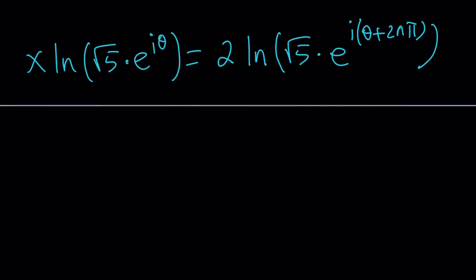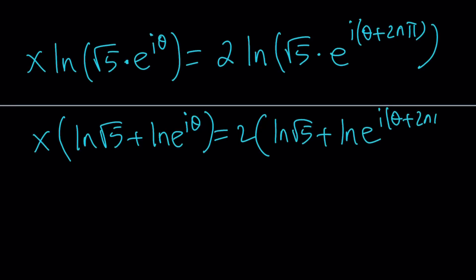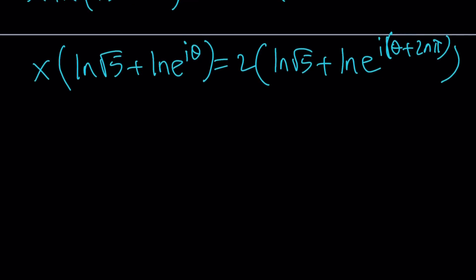Because you can move the x to the front, bring it down, x·ln(√5·e^(iθ)) = 2·ln(√5·e^(i(θ+2nπ))). Hopefully, so far, so good. Now we're going to distribute it. ln of a product, as you know, is the sum of the ln. So it's going to be x·(ln√5 + ln(e^(iθ))) = 2·(ln√5 + ln(e^(i(θ+2nπ)))). Let me go ahead and simplify as I go.